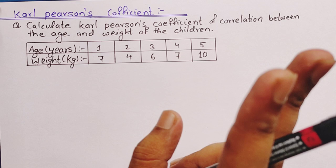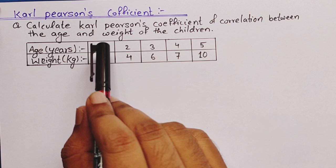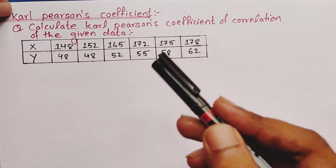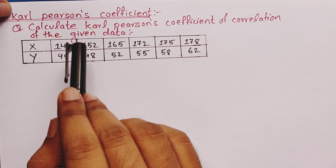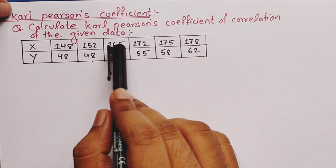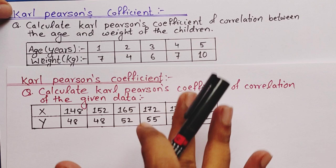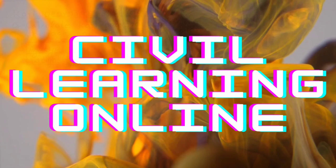There are basically two types of questions. In the first type, the variation in x is small — for example, in the age column here the difference is just one. There will be another question which has a high variation in x, like the second example I will solve in the next video, where the first term is 148, the second is 152 (difference of 4), and another term is 165 (difference of around 13). The method of solving these two types differs. First, let me take you through the formula — so without any further delay, let's get started.